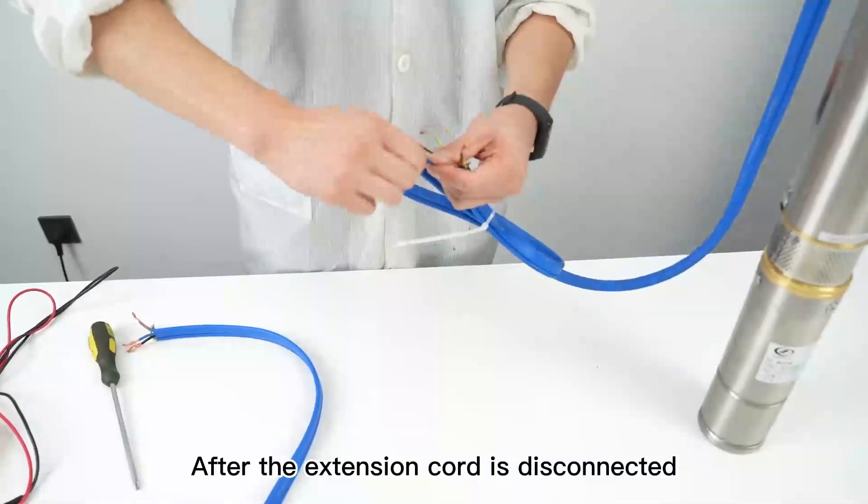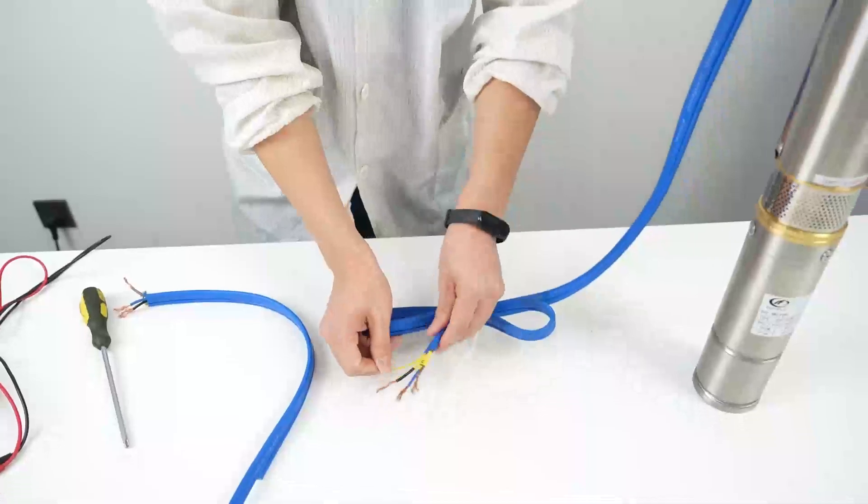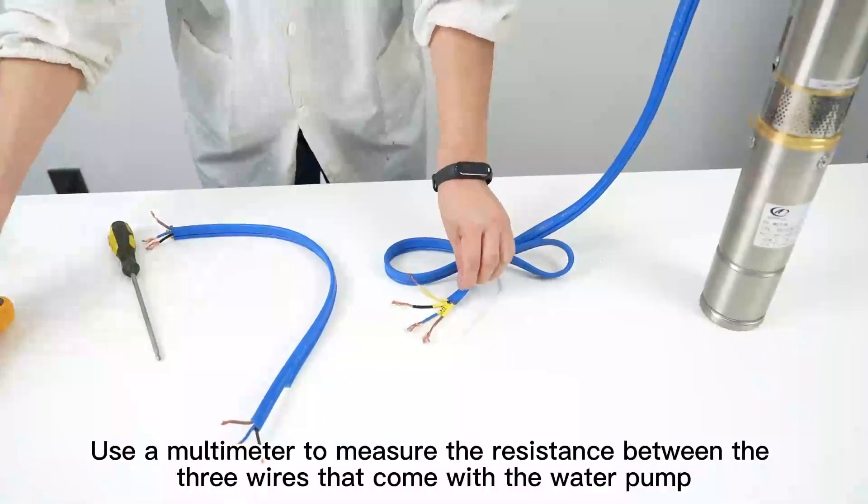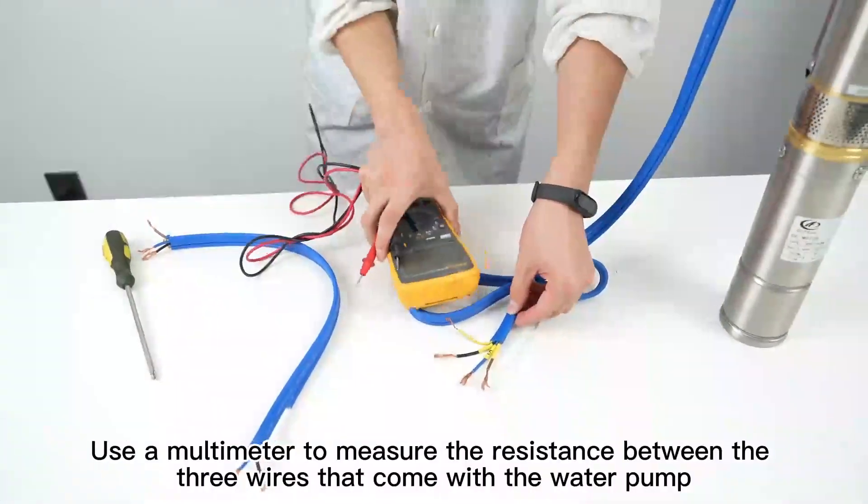After the extension cord is disconnected, use a multimeter to measure the resistance between the three wires that come with the water pump.